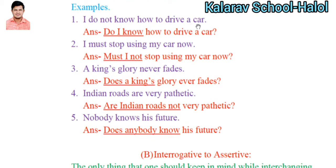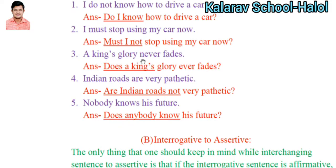Here are some examples. 'I do not know how to drive a car.' This sentence is about simple present tense, so 'do' comes ahead in front of the subject: 'Do I know how to drive a car?' with a question mark. 'I must stop using my car now.' Here a modal is there, so must comes ahead: 'Must I not stop using my car now?' 'A king's glory never fades.' No helping verb is given, but this is simple present tense, so the question is formed with 'does': 'Does a king's glory ever fade?'